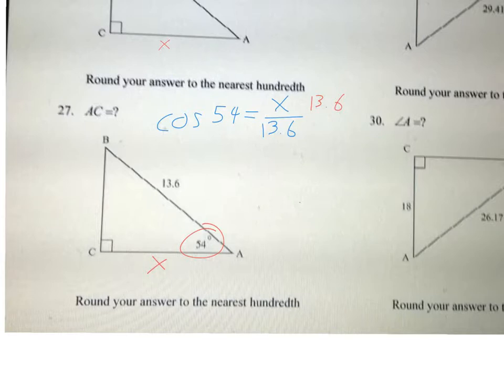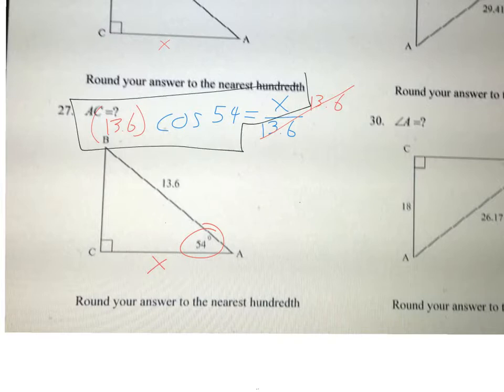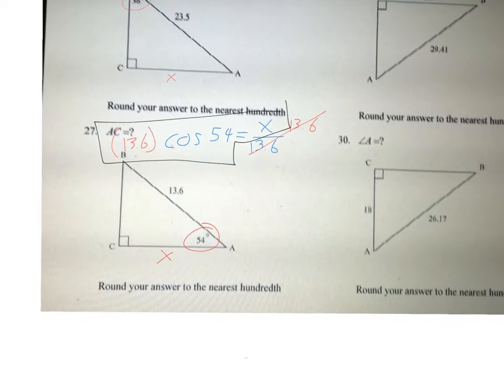So I'm going to multiply both sides by 13.6. These cancel out, and here's what I plug into my calculator once again. X equals 13.6 times the cosine of 54. Make sure it's in degree mode, and then just round to the two decimals, round to the nearest hundredth.